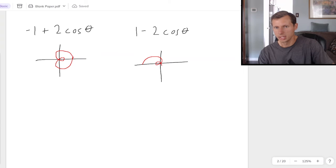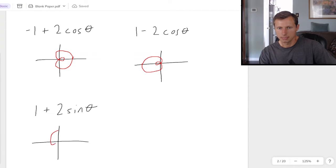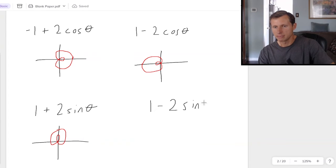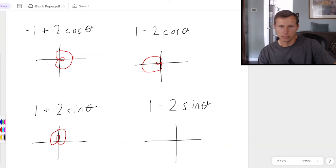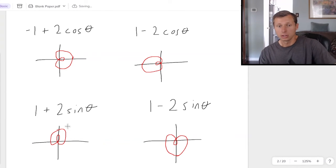and that's going to be a limaçon that looks like this, with the bigger loop pointing to the left. And then if you want it to point up or down, that's where the sines come in, so that would be an example like this, with a positive sign, is going to point up. And then last, obviously, if I want it to point down, then I just have to do a negative sign, and that would look like this. So again, all of these are the inner loop scenario.